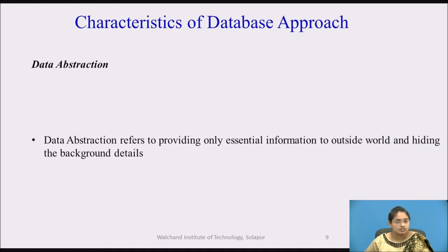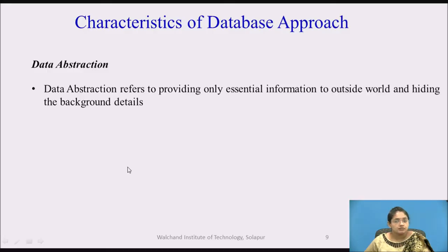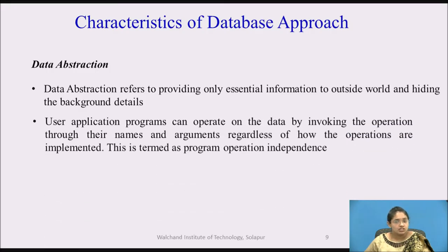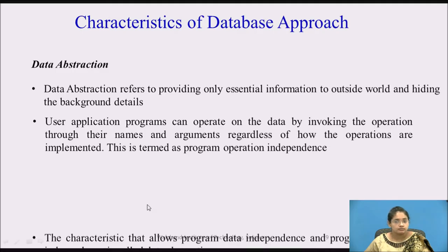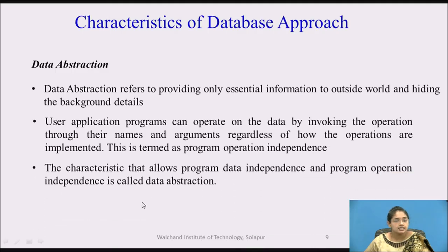Next is data abstraction. Data abstraction refers to providing only essential information to the outside world and hiding the background details. User application programs can operate on the data by invoking operations through their names and arguments, regardless of how the operations are implemented. This is called program-operation independence. The characteristic that allows both program-data independence and program-operation independence is called data abstraction.